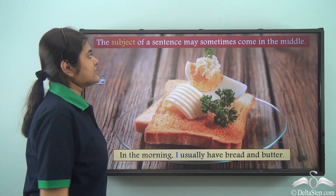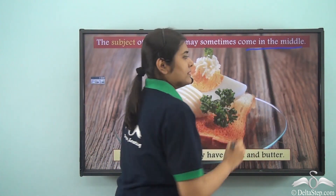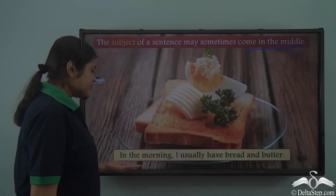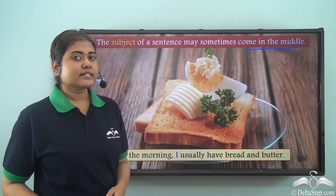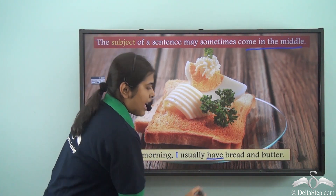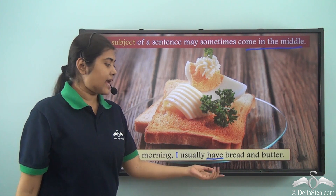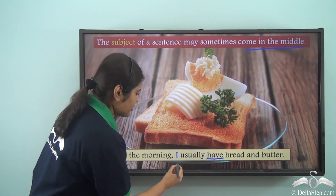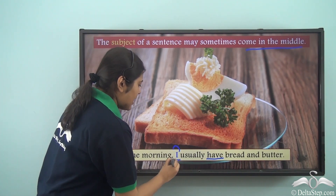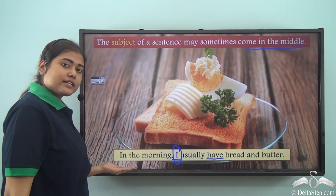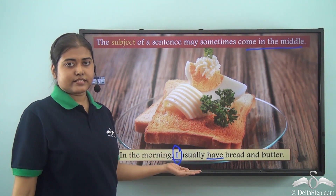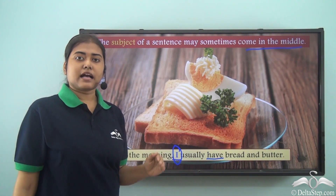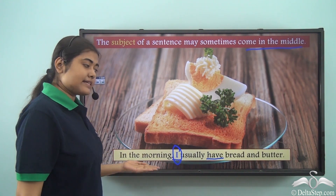The subject of a sentence may sometimes come in the middle. So if I take this example: 'In the morning I usually have bread and butter.' The verb in this sentence is 'have,' and who is performing this action? It is the pronoun 'I.' So here 'I' is the subject of the sentence, but it is not at the beginning — the sentence begins with 'in the morning.' So the subject is in the middle of the sentence.